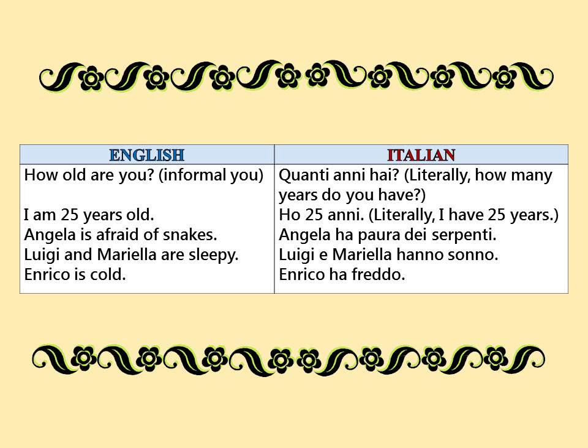Let's use some of these avere expressions in example sentences. 'How old are you?' — Quanti anni hai? — literally, 'How many years do you have?' 'I am 25 years old' — Ho 25 anni — literally, 'I have 25 years.' 'Angela is afraid of snakes' — Angela ha paura dei serpenti. 'Luigi and Mariela are sleepy' — Luigi and Mariela hanno sonno. 'Enrico is cold' — Enrico ha freddo.